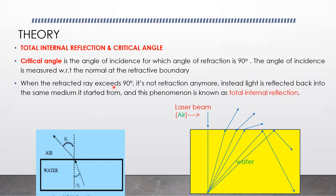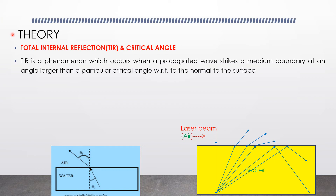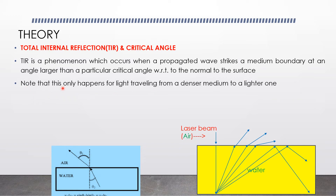When the refracted ray exceeds 90 degrees, there is no refraction anymore. The light is reflected back into the same medium — this is total internal reflection, which occurs when a propagating wave strikes a medium boundary at an angle larger than the critical angle with respect to the normal to the surface. Note that this only happens for light traveling from a denser medium, for example water, to a lighter medium such as air.